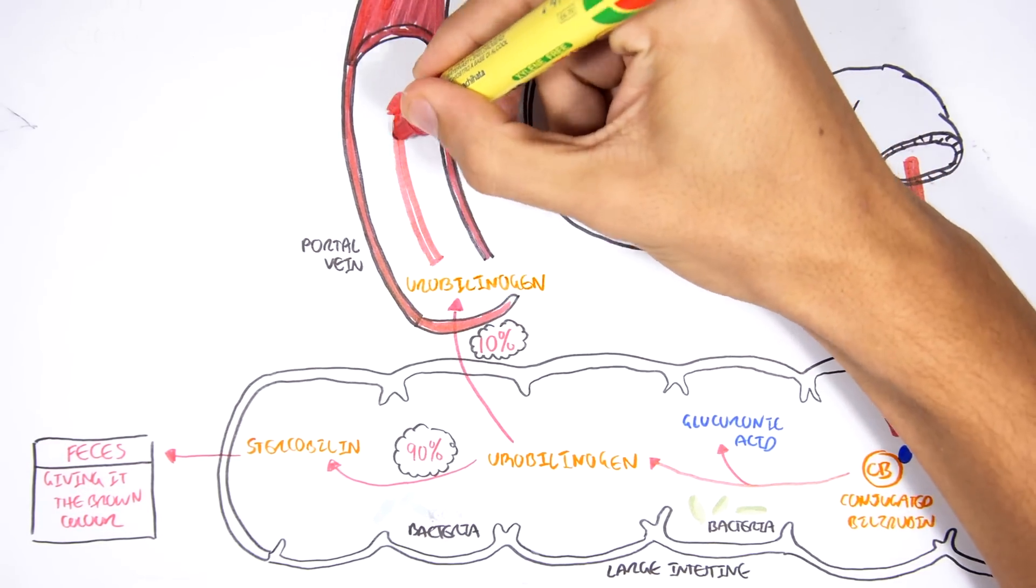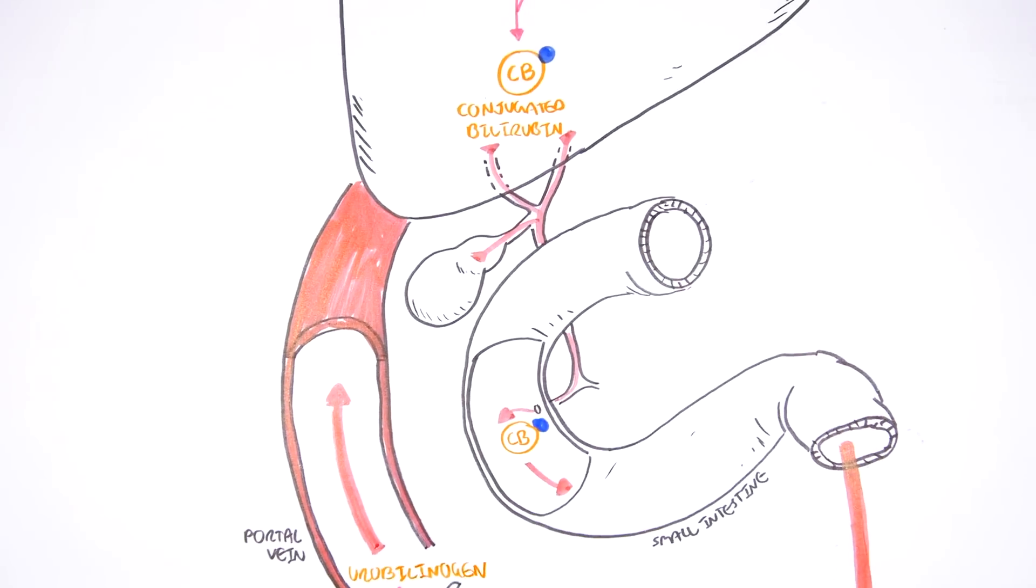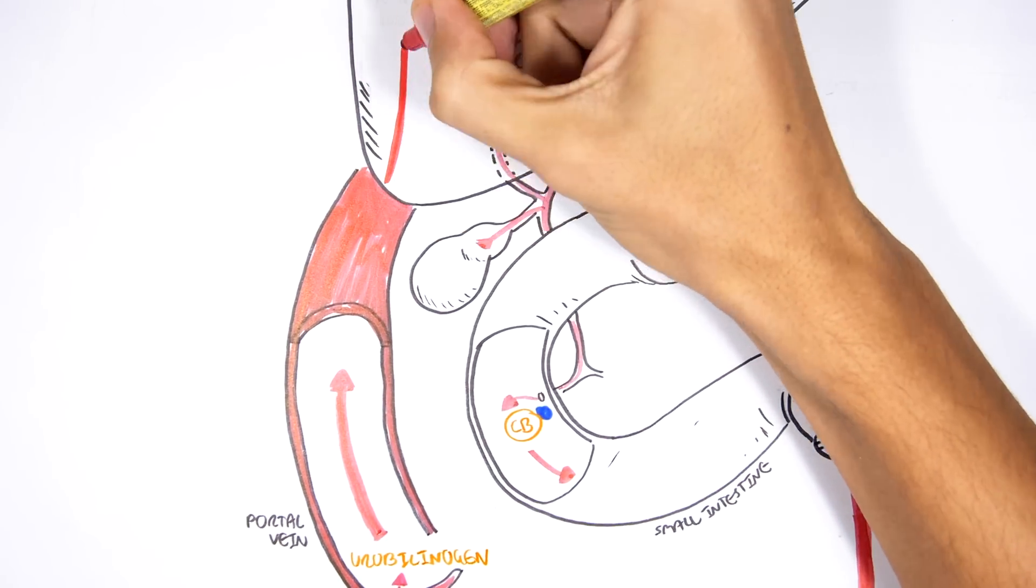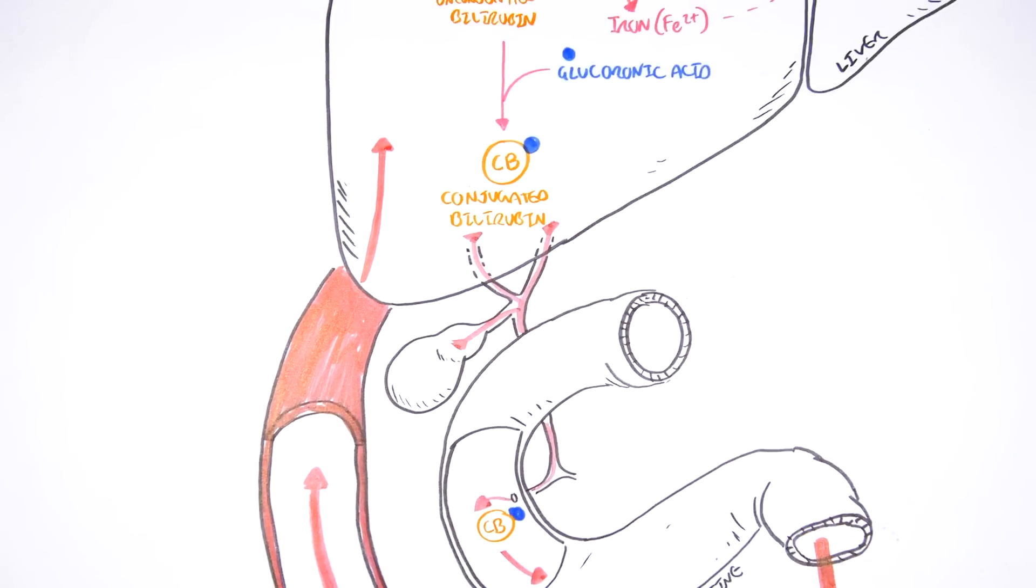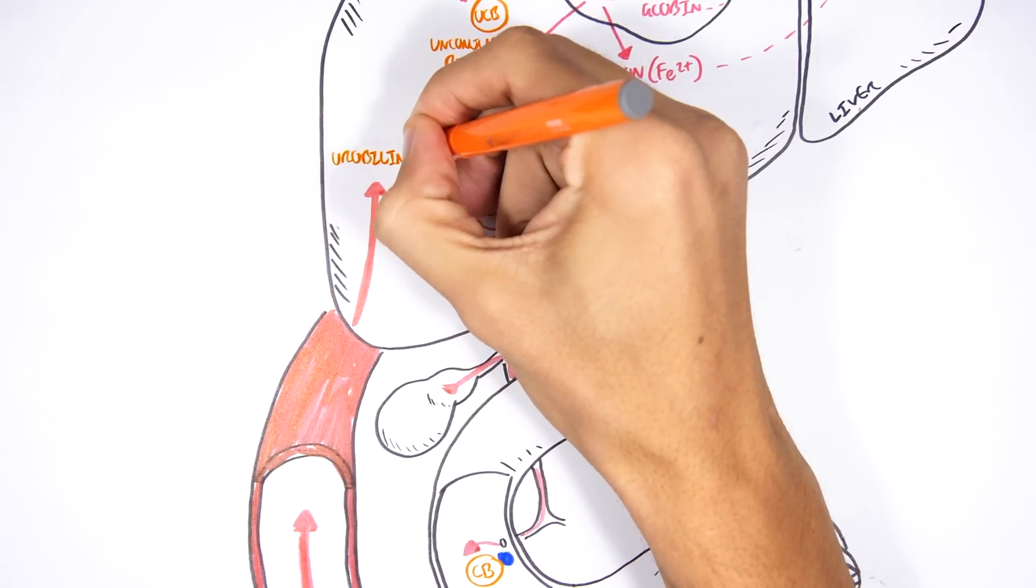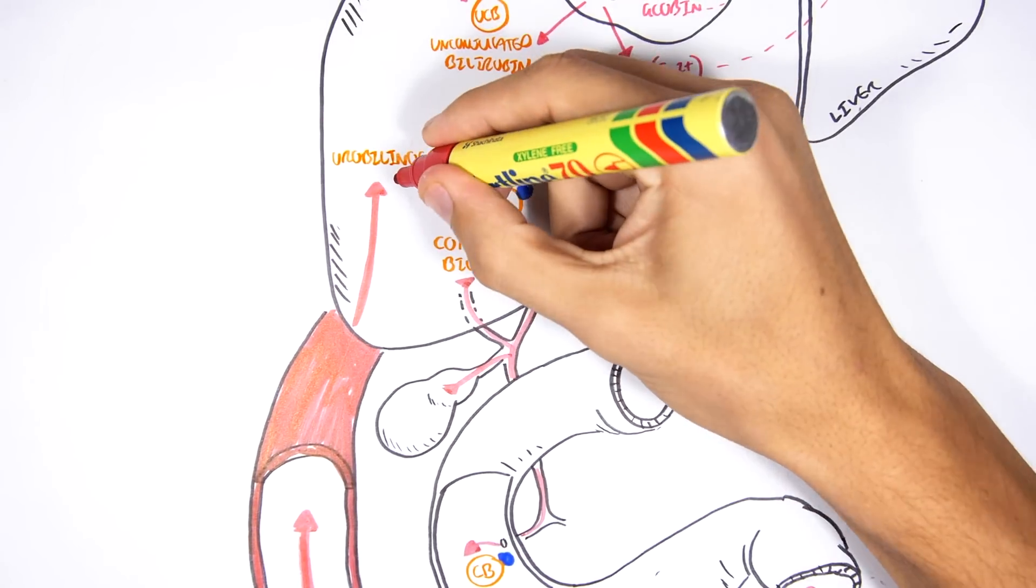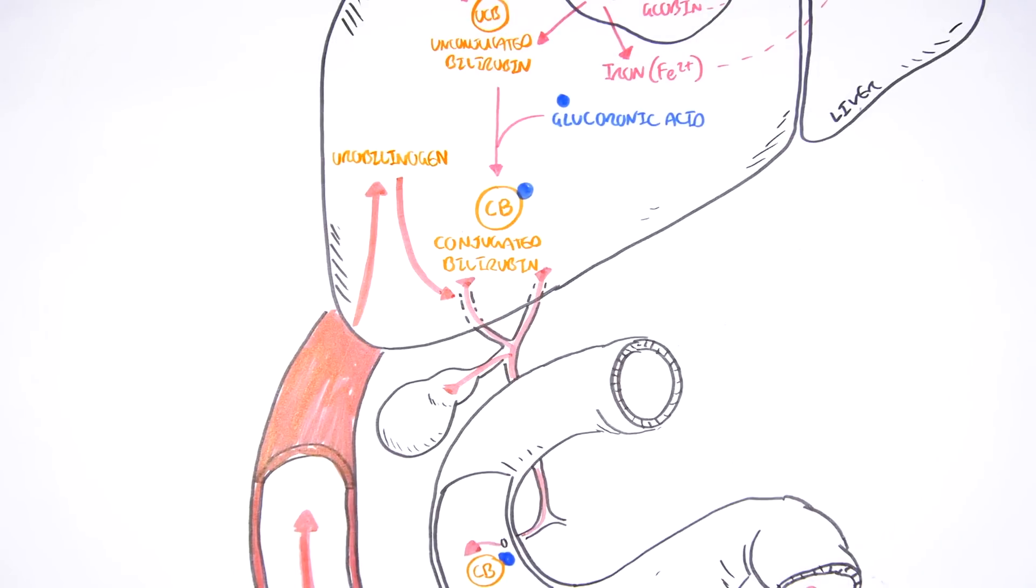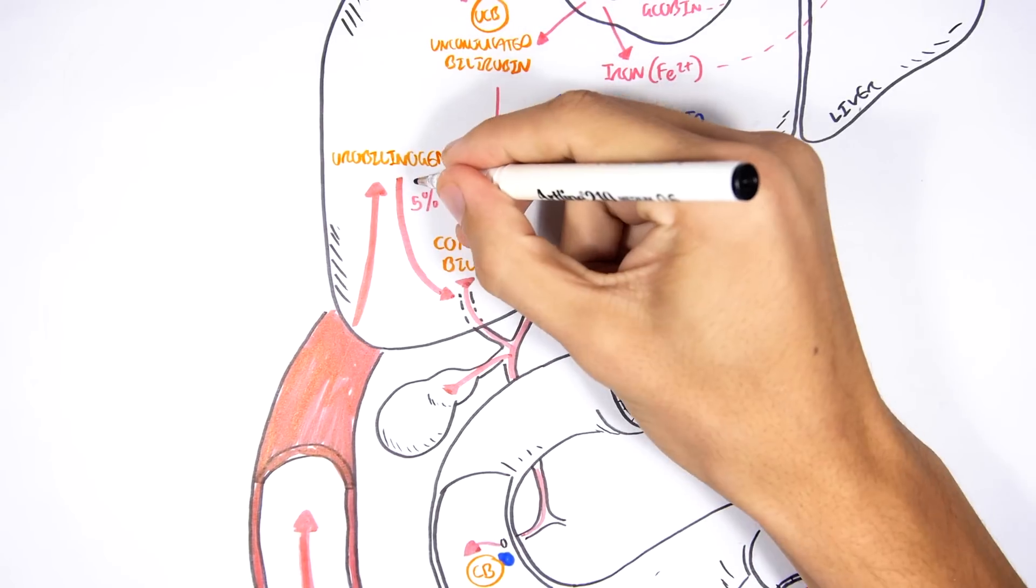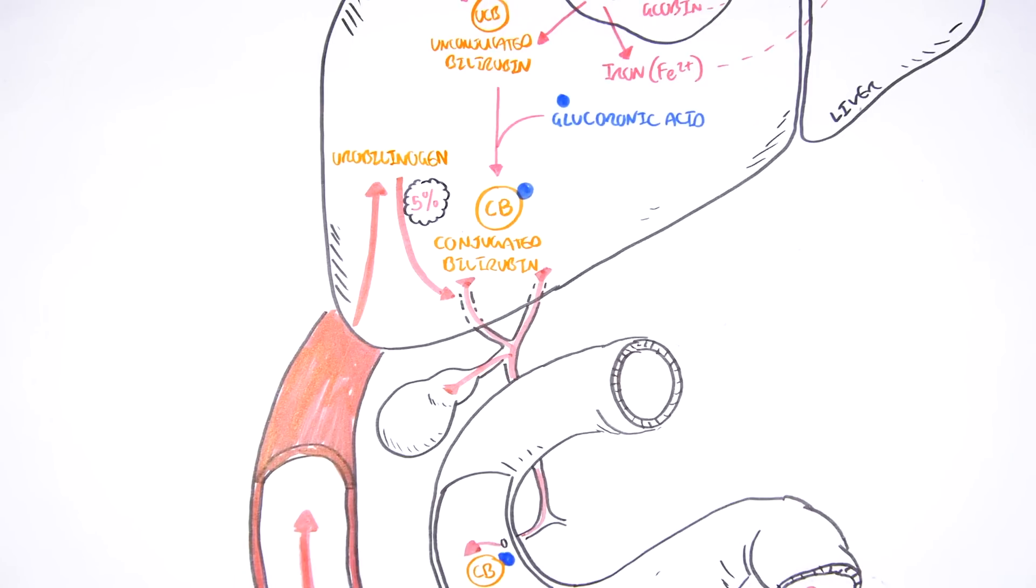Well, this small percentage is carried by the albumin back to the liver through the portal system. About 5% of this urobilinogen will participate in the enterohepatic urobilinogen cycle, in which it is taken up by the liver and then re-secreted into bile again.